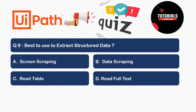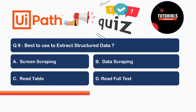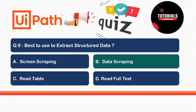Question 9: What is the best technique to extract structured data — data in the form of rows and columns? Options: A) Screen Scraping, B) Data Scraping, C) Read Table, or D) Read Full Text. The correct answer is Data Scraping. Available in UiPath Studio under UI Automation activities, Data Scraping is the best way to extract structured data from any source. If you're enjoying this video, please like and subscribe to the channel.